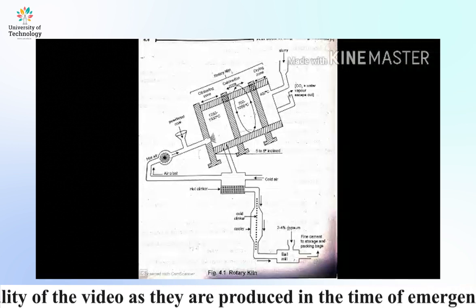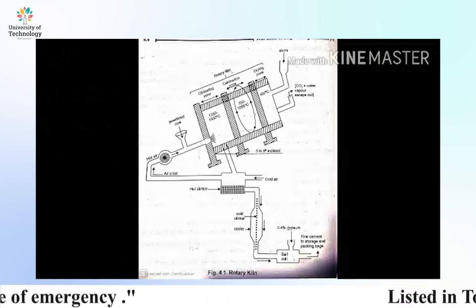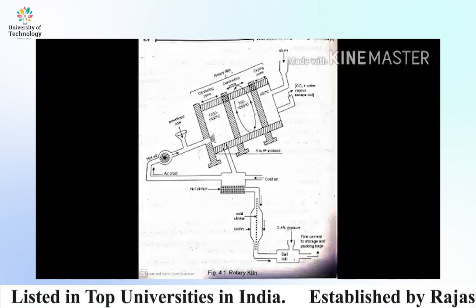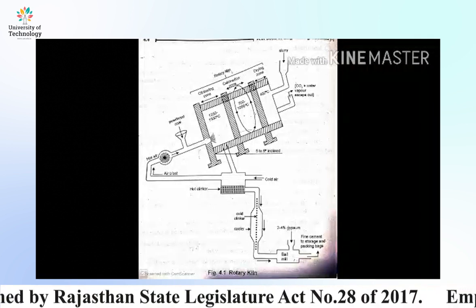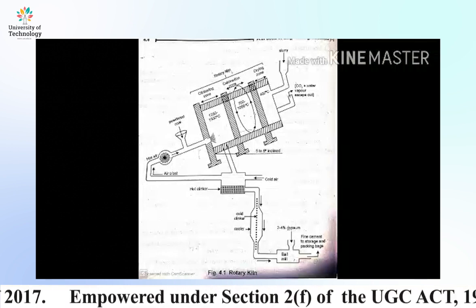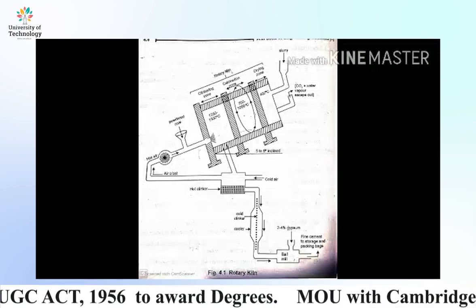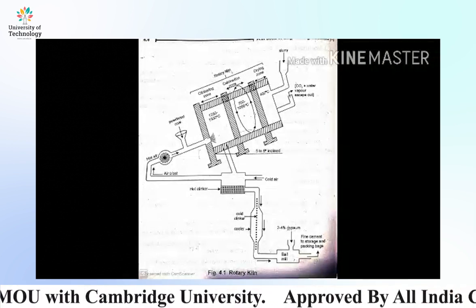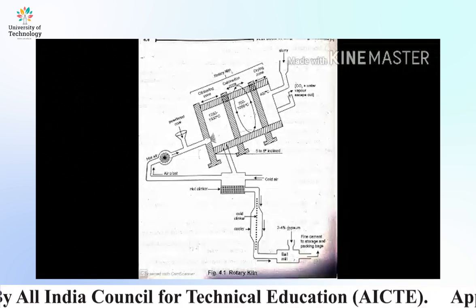The calcination zone has a temperature range of about 700 to 1000 degrees centigrade. Here, the limestone breaks down: calcium carbonate decomposes to CaO plus CO2. The third zone is the clinker zone, which is the lower part of the rotary kiln with a temperature range of 1250 to 1500 degrees centigrade. In this zone, clay and lime react with each other and form complex molecules — aluminates and silicates — which further fuse together and form grey-colored small stones called clinker.